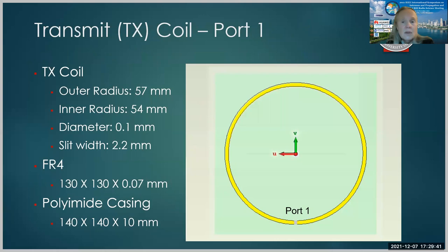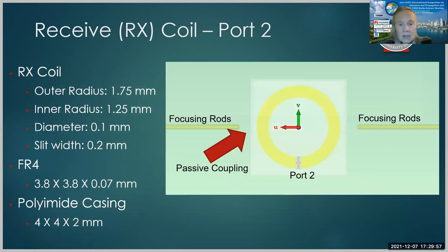So let's first look at the transmit and receiver coils. The transmit coil is a relatively large coil outside the body. It's produced on FR4, and it has a polyimide casing. All of this is simulated at this point. And then we have a receiver coil that's much smaller that could be on the four millimeter implant. And then if we are considering focusing rods, as we will in some of our cases, the focusing rods are not actually touching the internal antenna. They're just getting close to it. So there's passive coupling between the rods and the internal antenna, the receiver coil.